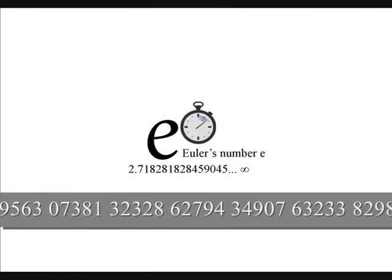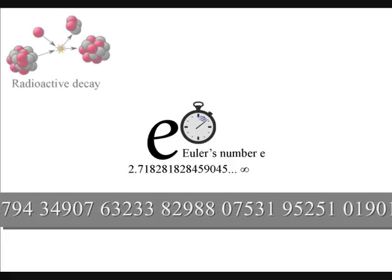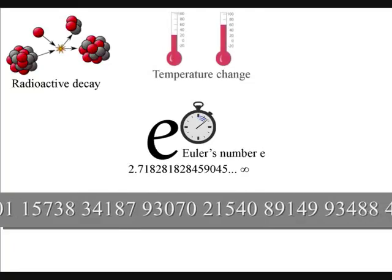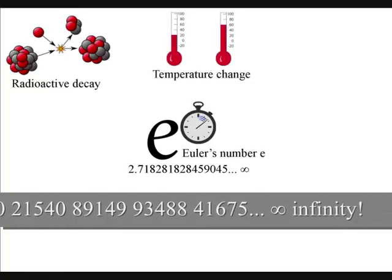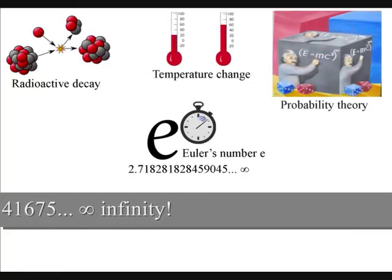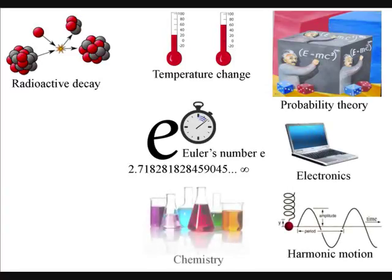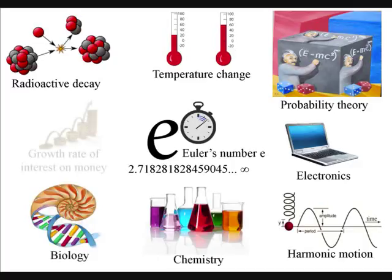Euler's number E can be found everywhere in such diverse things as radioactive decay, temperature change, probability theory, electronics, harmonic motion, chemistry, biology, and how the growth rate of interest on money is relative to the length of each time period it is calculated to.